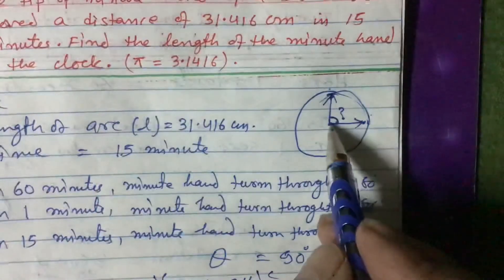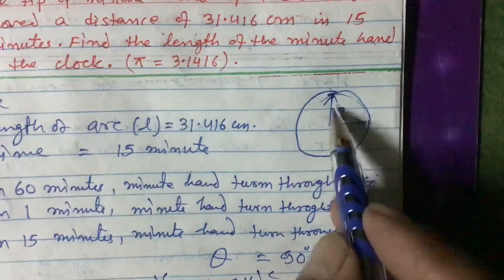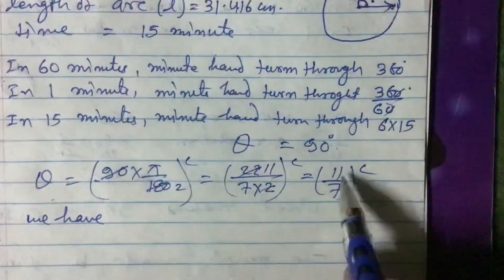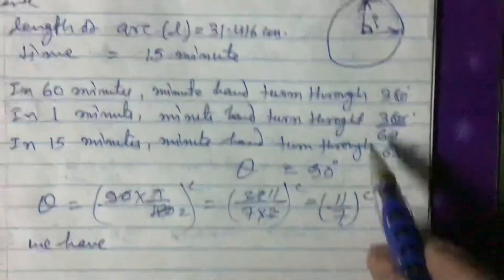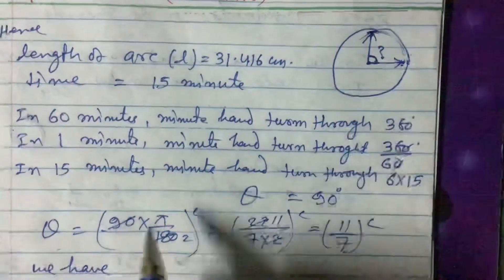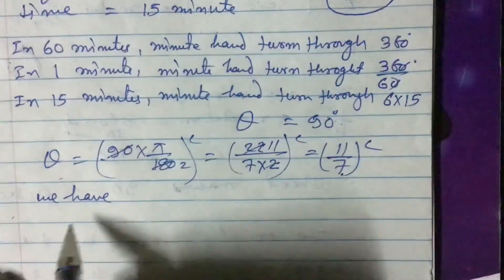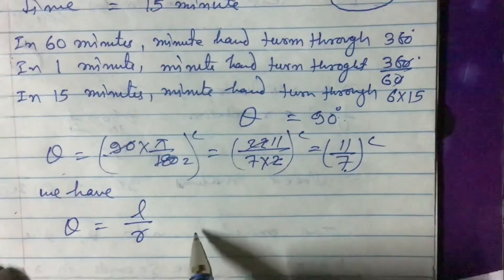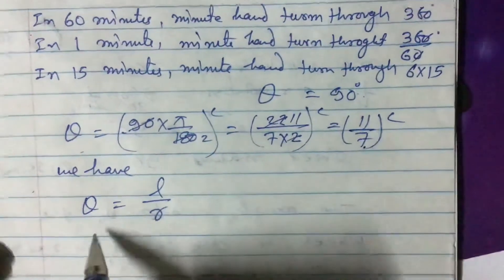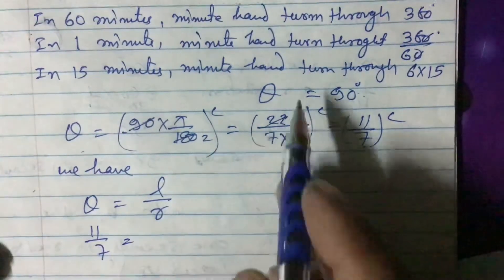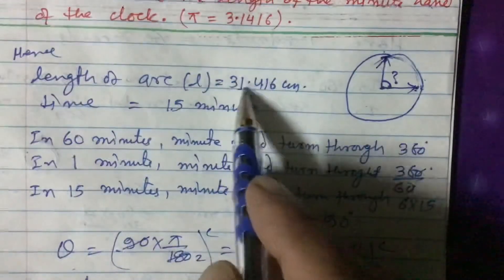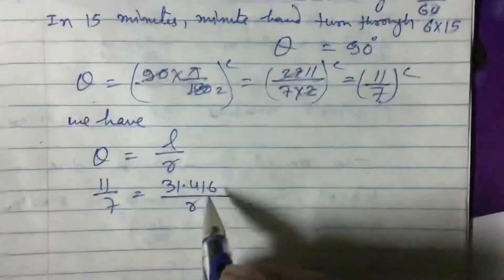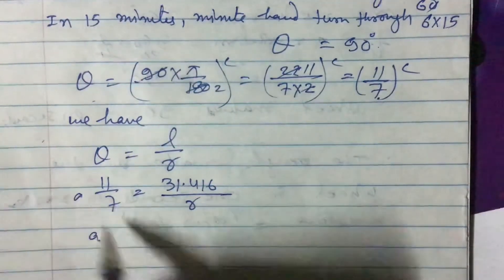We are asked to find the length of the minute hand, which is the radius R. We have L = 31.416 cm and theta = 11/7 radian. Using the formula theta equals L divided by R, we substitute: 11/7 equals 31.416 divided by R. Cross multiplying gives R equals 31.416 times 7 divided by 11.